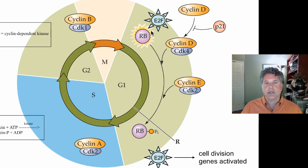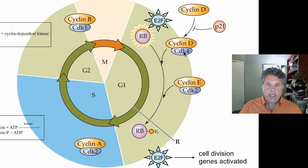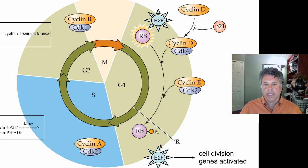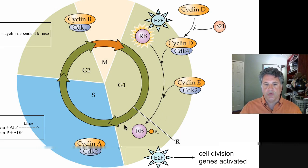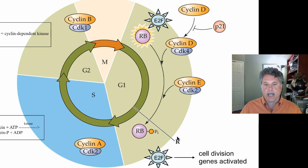What determines whether the retinoblastoma protein is in its active or inactive form is whether or not it is phosphorylated, and it is phosphorylated by cyclin D and associated cyclin-dependent kinase 4. That phosphorylation will inactivate the retinoblastoma protein, releasing E2F and causing the cell to move through the cell cycle past this restriction point. One of the targets of E2F is actually the cyclin E gene, which turns cyclin E and CDK2 on, helping the cell move past the restriction point.